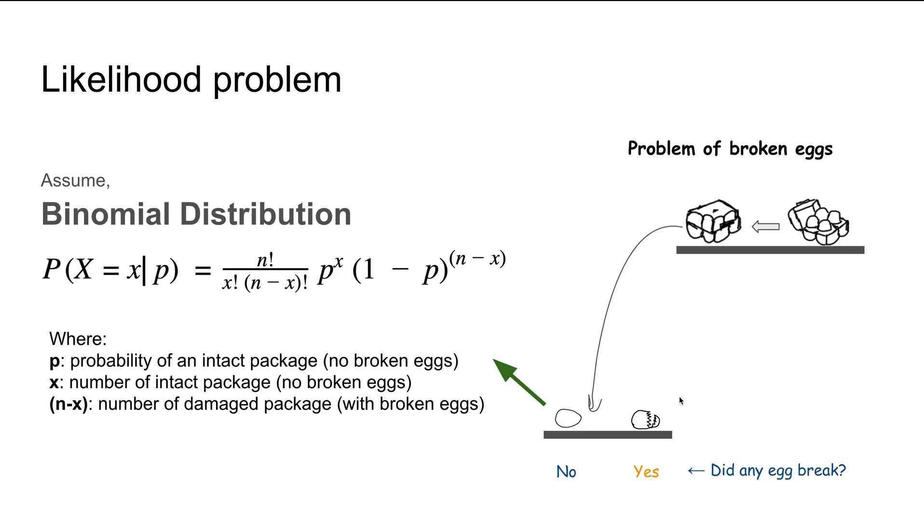Now because this is a yes or no problem, we can use binomial distribution, shown here on the left-hand side. In this equation, n is the total number of observations, X is the number of successes, and P is the probability. In this particular scenario, we'll think of the values for P as assumed values.